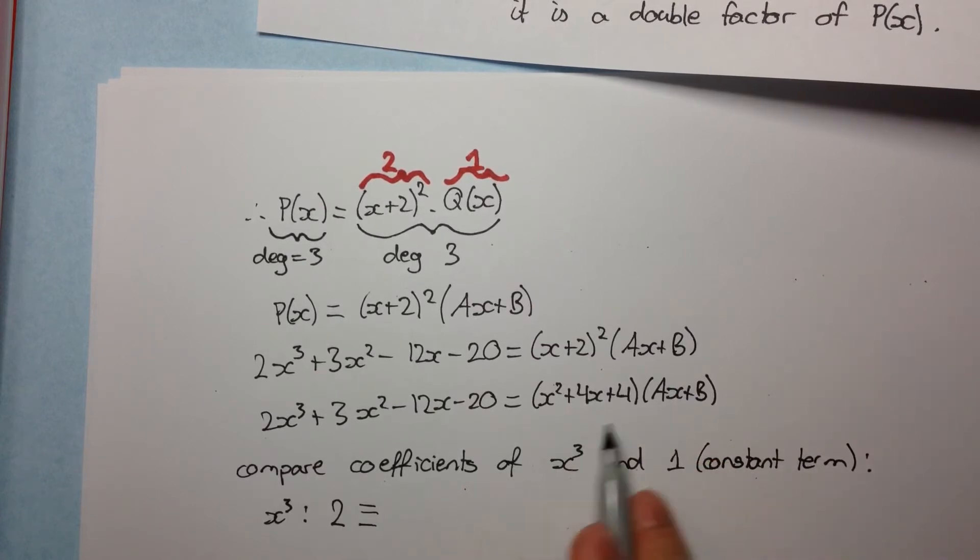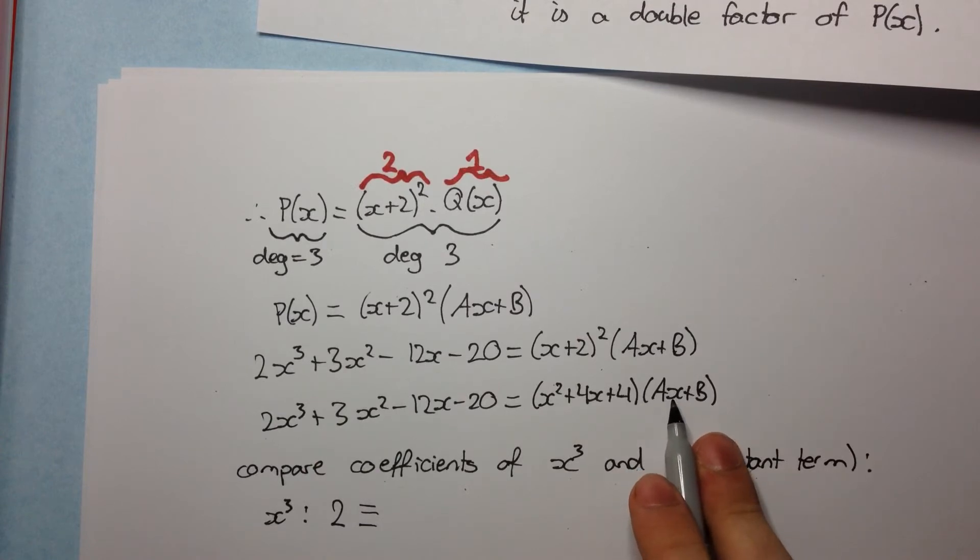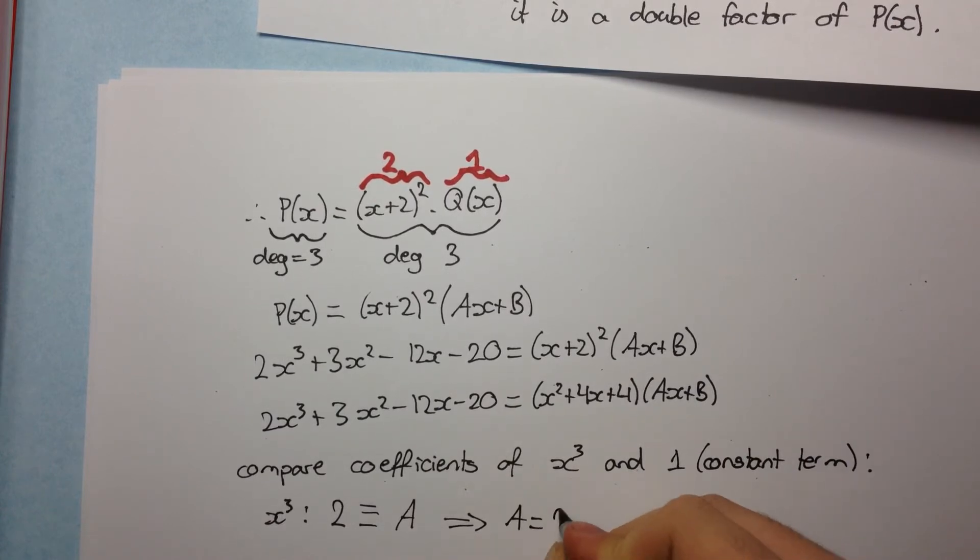But how do we get x³ on the right-hand side? Well, we get it from multiplying x² by Ax. And so the coefficient there will be A. And so here, that just tells us that A is equal to 2.